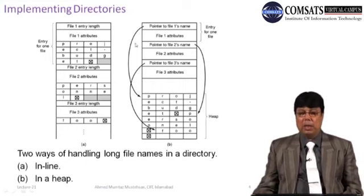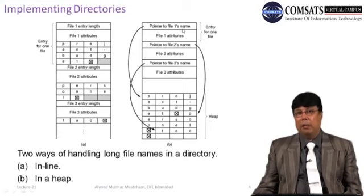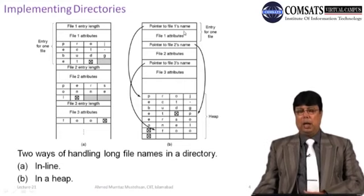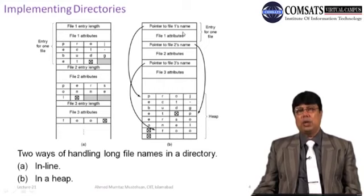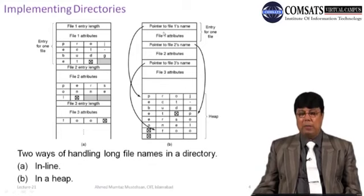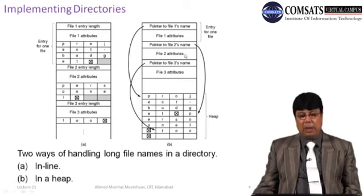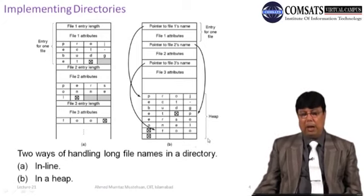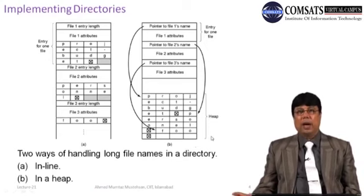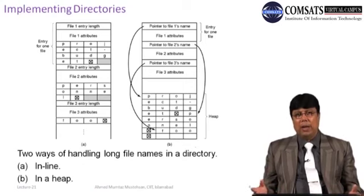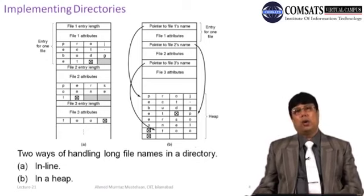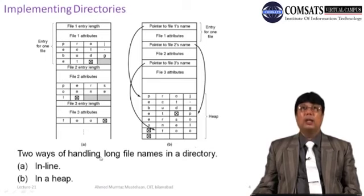The second option is to place a pointer to the file name at the beginning of the entry. We just prefer to have the pointer so we can quickly retrieve relevant information. We have a name pointer, then file attribute pointer to the second file, then to the third file. The file names of the first, second, and third files are placed onto the heap. This means long file names can easily be accommodated without worrying about how to handle them.